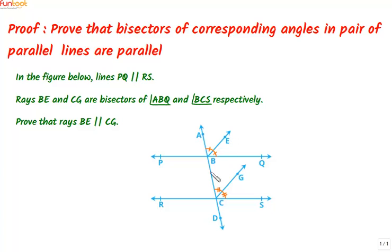Since BE is the bisector of angle ABQ, that means angle ABE is equal to angle EBQ. And since CG is the bisector of angle BCS, that means angle BCG is equal to angle GCS.